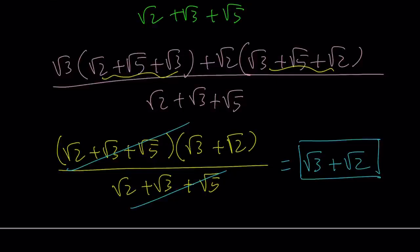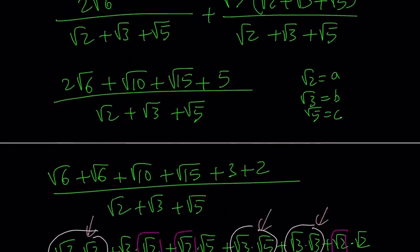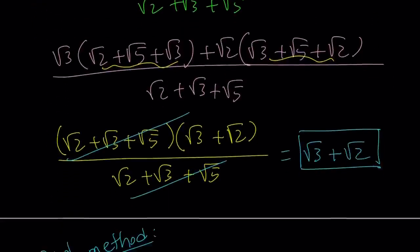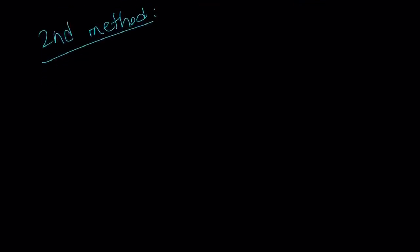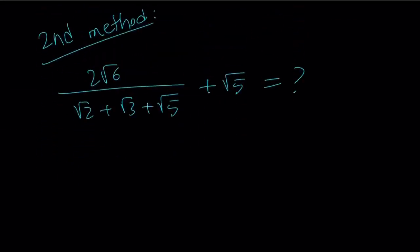Let's take a look at the second method. My first method involved making a common denominator and then breaking down the numerator so that it's factorable by grouping, which is not very straightforward. Obviously after I do the second method, you're going to realize if you know the second method, you can come up with the first method. So what is the original problem? 2 root 6 divided by root 2 plus root 3 plus root 5, and then root 5 added to this. Hopefully we're going to get the same answer, root 3 plus root 2.